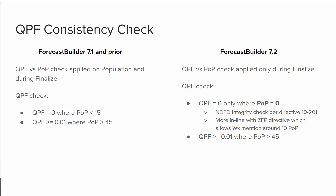This QPF check change will also help offices utilizing WPC for QPF, because in scenarios where WPC is providing QPF and Forecast Builder is populating MVM for POP, this prevents several hundredths of WPC QPF from being suddenly cut off at the POP 15 threshold that existed in version 7.1.